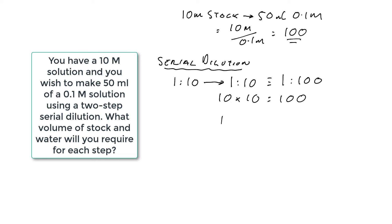We can see this in the diagram. Here we've got a beaker with our 10 molar stock. If we do a one-in-10 dilution that gives us a 1 molar solution, and if we do another one-in-10 that gives us a 0.1 molar solution. So by doing a one-in-10 followed by a one-in-10, we end up with our required concentration of 0.1 molar.